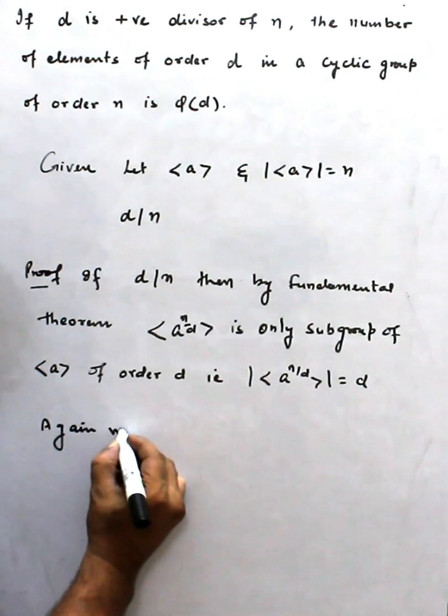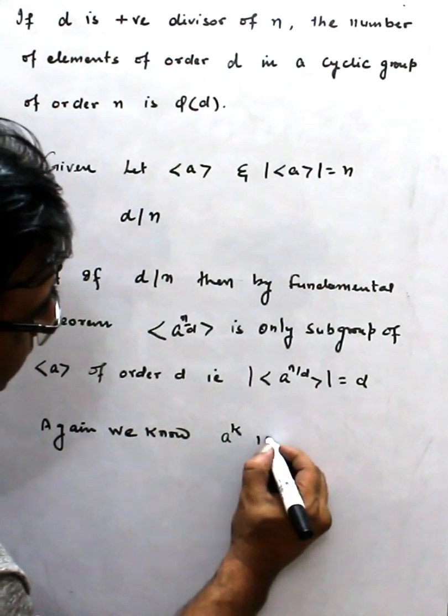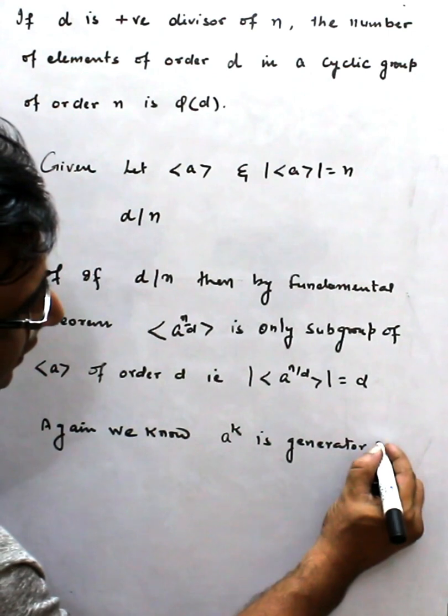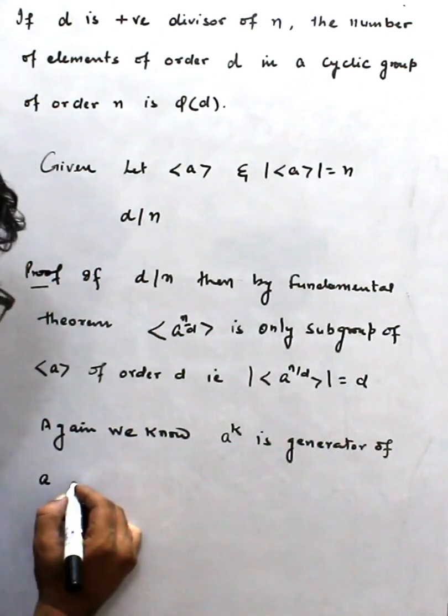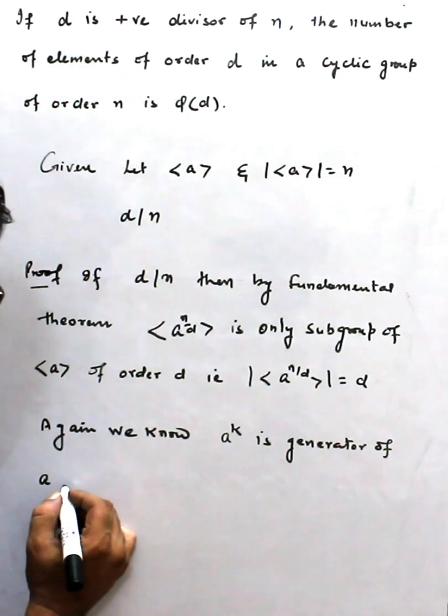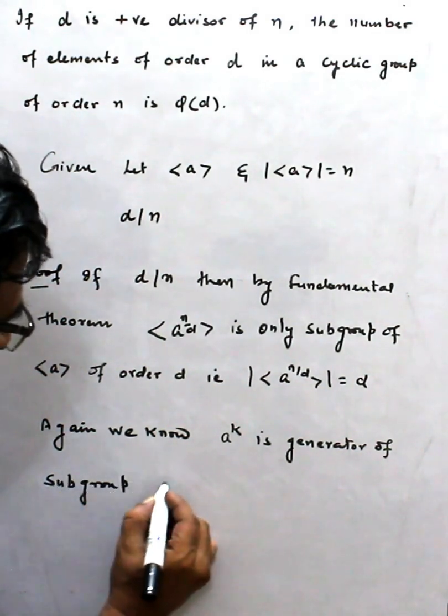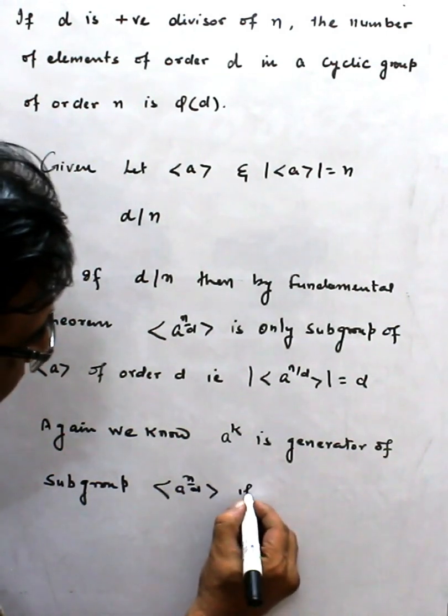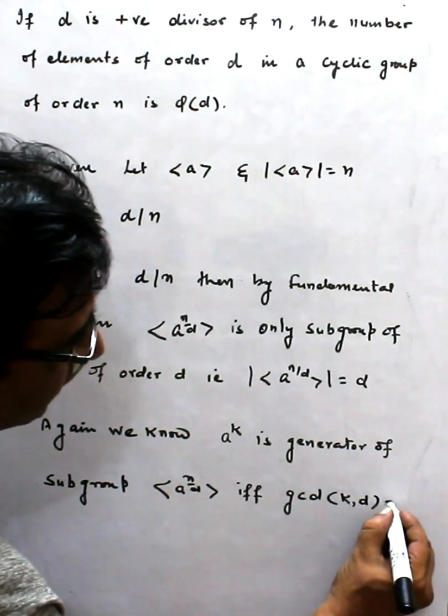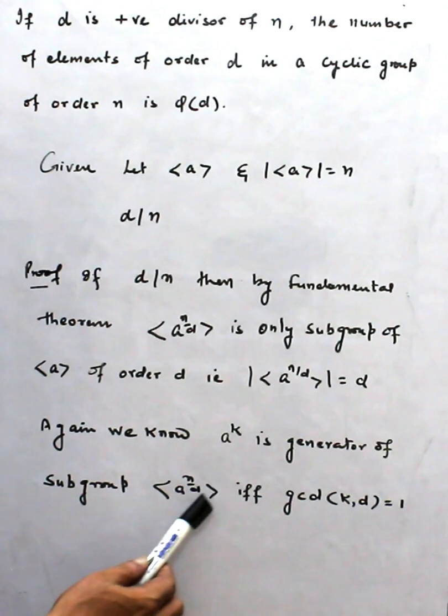We know a^k is another generator of a subgroup. <a^(n/d)> if and only if gcd(k, d) equals 1. That means k and d are coprime. If I replace d equal to n, then what happens?